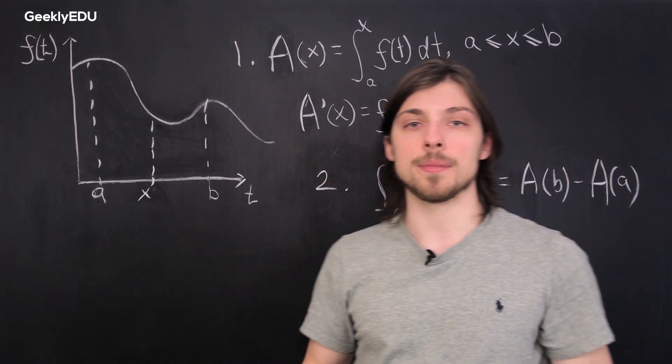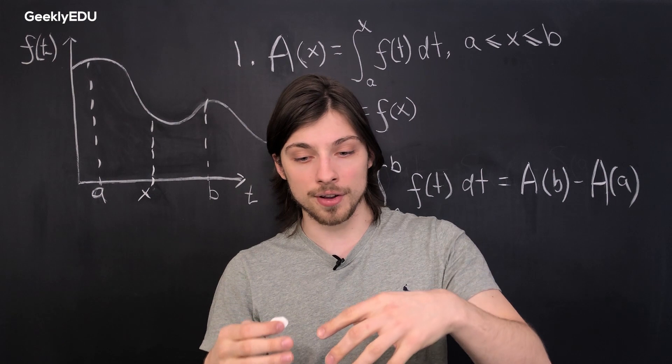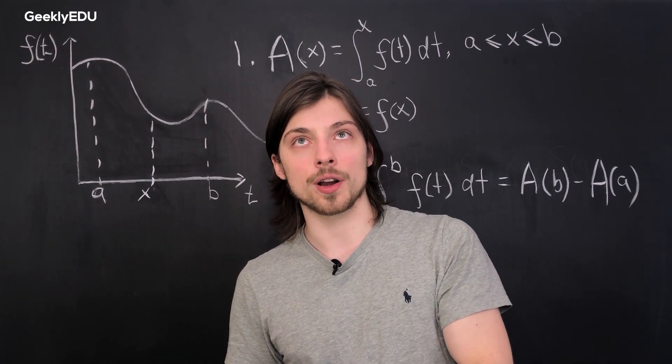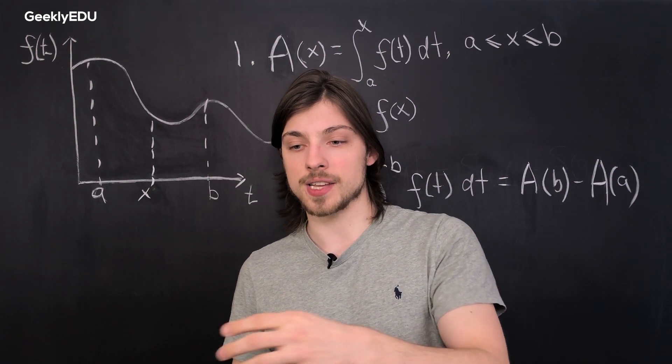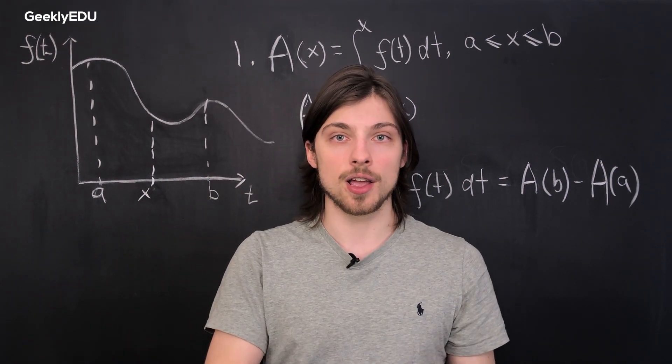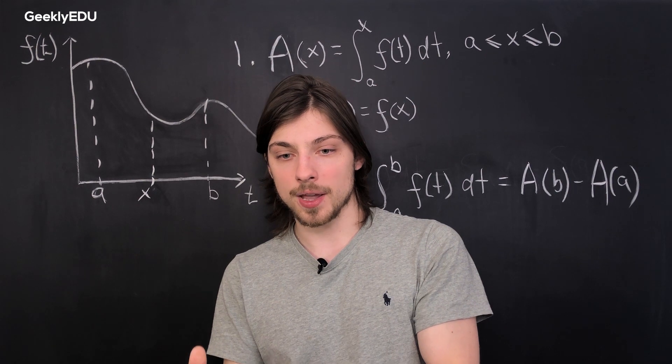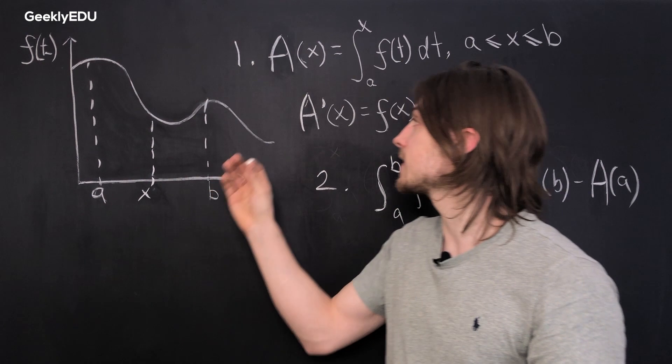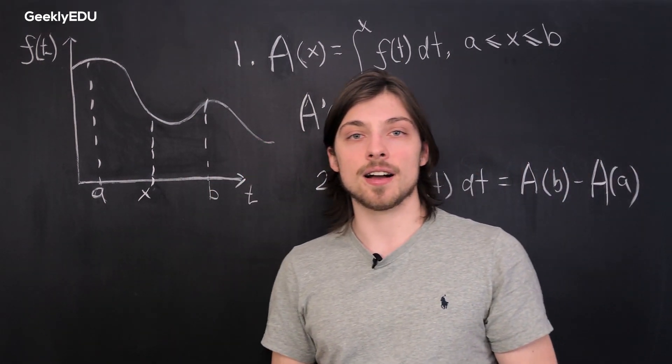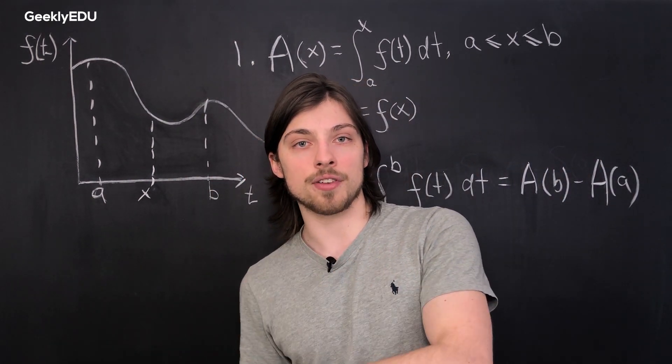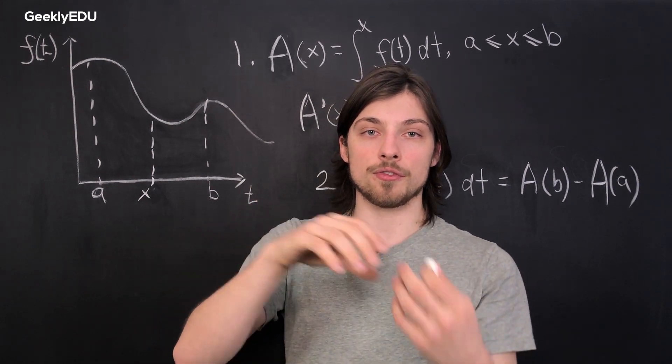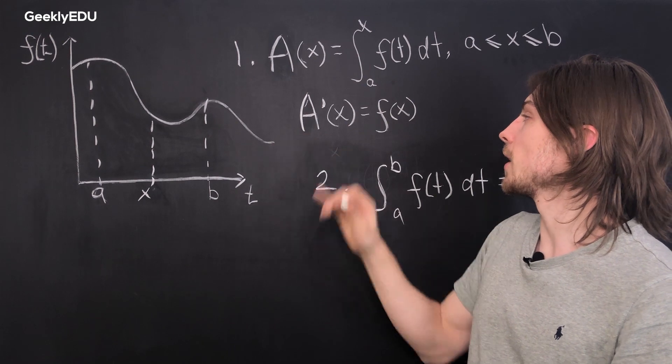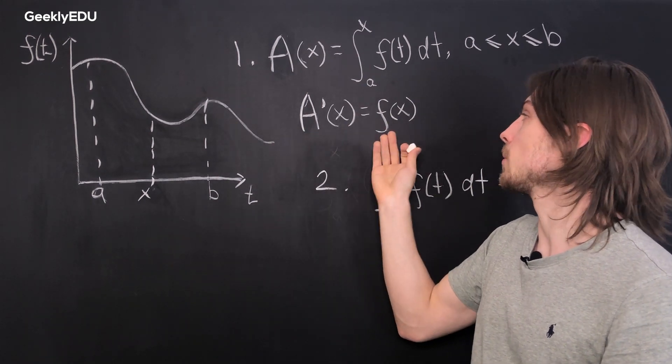So essentially that means that the derivative of the integral is the original function. Or in other words, if we take that and reverse it, we're taking some function and we're finding the anti-derivative of that function, and that's exactly what an integral is. It's a derivative that has been reversed into its original state pre-differentiation. This is denoted as A prime of x equals f of x.